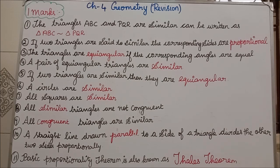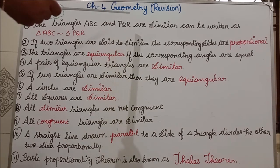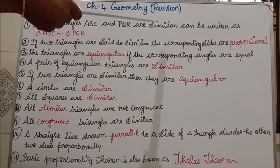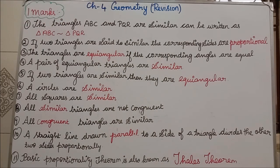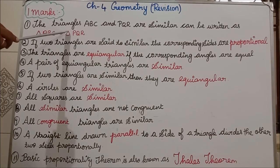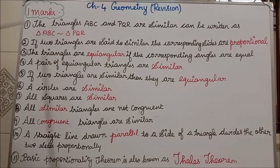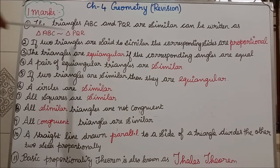The triangles ABC and PQR are similar. This can be written as: the two triangles are similar. How can we write that triangle ABC is similar? This line is called the similar symbol — this wavy line denotes similar. Triangle ABC is similar to triangle PQR.